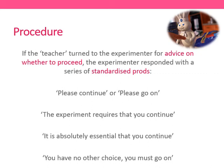The four prods used in order were: first, 'Please continue' or 'Please go on.' If the teacher protested a second time, 'The experiment requires that you continue.' A third protest: 'It is absolutely essential that you continue.' And a fourth protest: 'You have no other choice, you must go on.' You can see that this might feel like it's removing the right to withdraw.